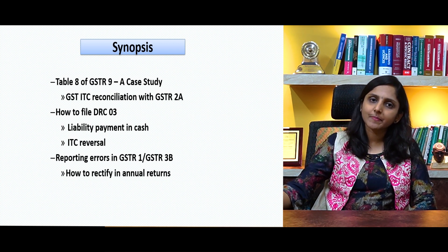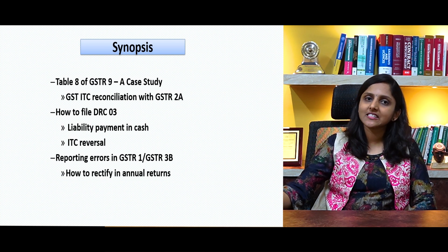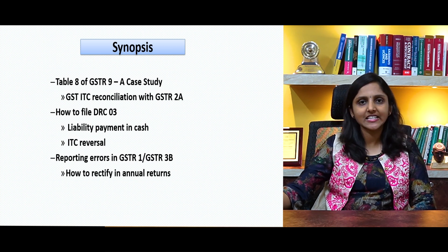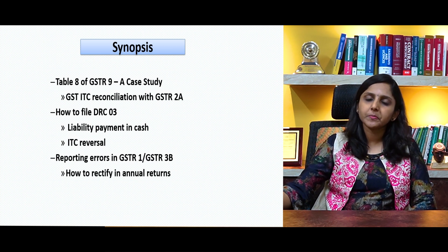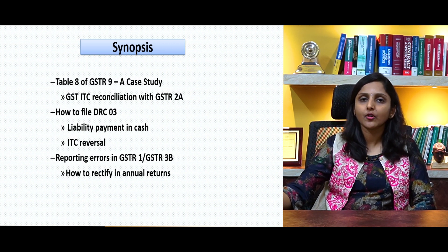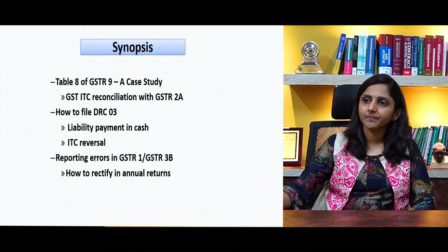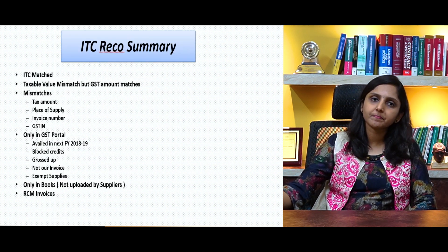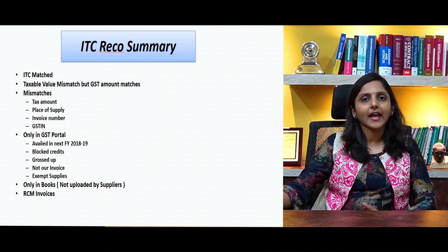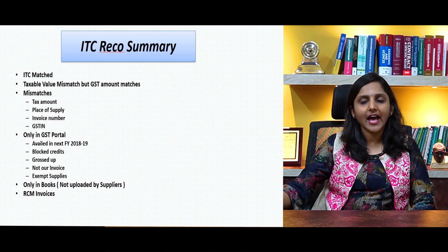The second aspect we will be covering is the DRC-03 — how to file it, one in case of liability discharge and another in case of ITC reversal. Third, we will be covering the reporting errors which occurred in GSTR-1 or 3B and how to rectify or report them in annual returns. Now the first part: GST ITC reconciliation and the impact on and reporting in table 8 of annual returns.